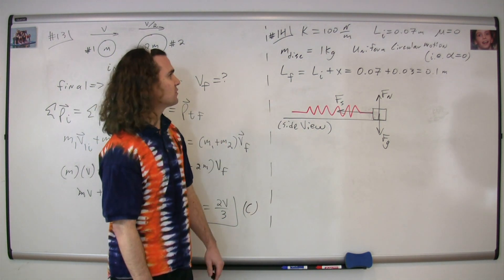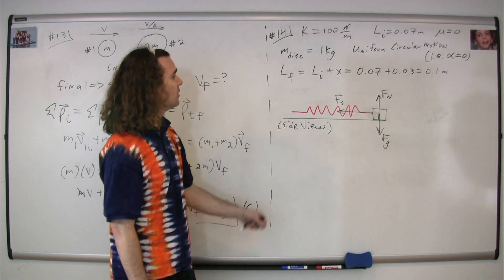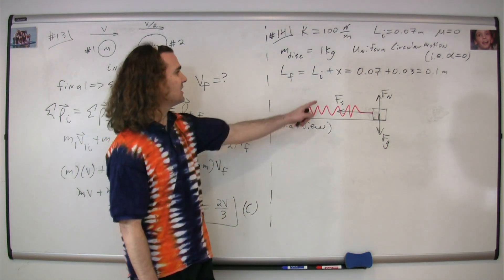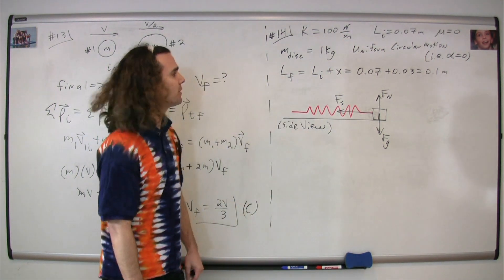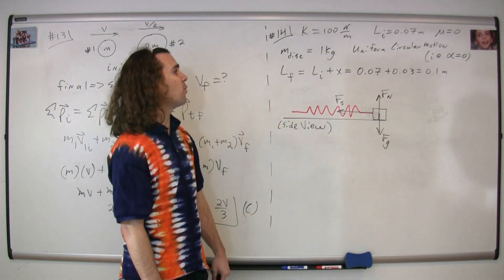We know the mass of the disc is one kilogram. It's in uniform circular motion, which means that the angular acceleration is equal to zero. We know that the final length, while it's moving in a circle, is equal to the initial length plus the displacement from the equilibrium position, or 0.07 plus 0.03, that works out to be 0.1 meters.